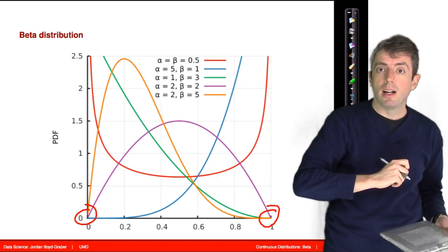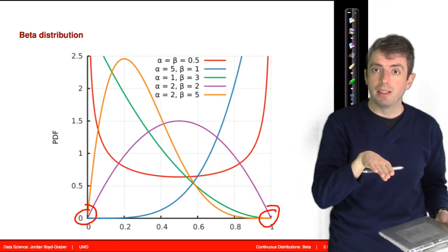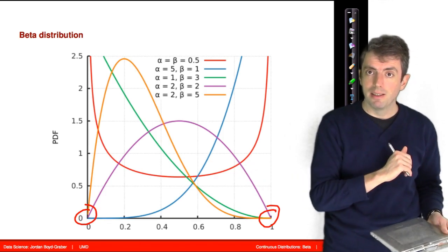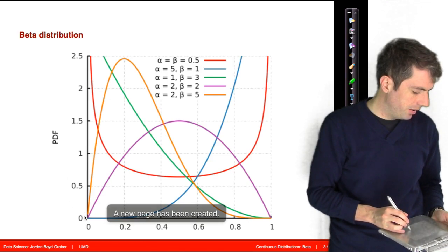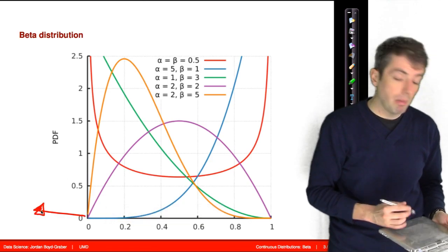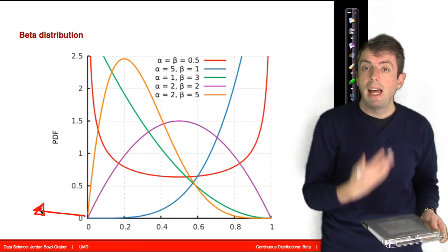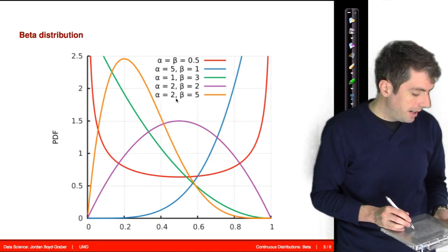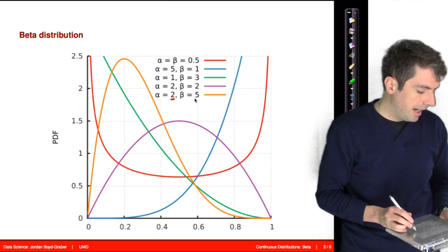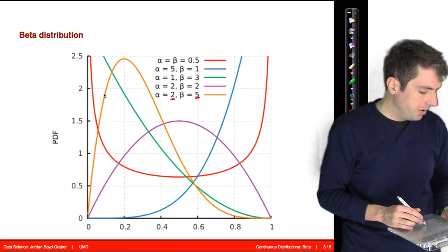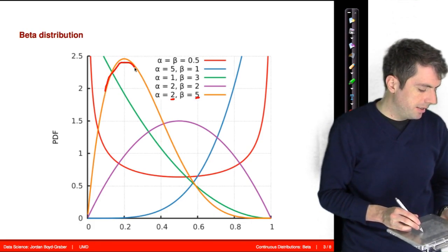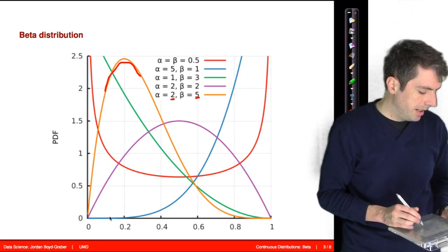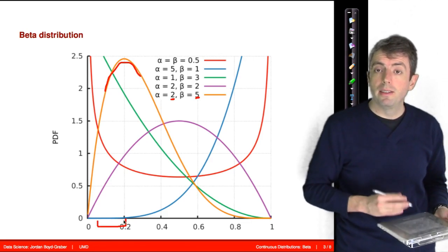The second you get beyond zero, the probability is zero, so anything to the left is completely impossible as an outcome of the beta distribution. If you choose alpha equal to 2 and beta equal to 5, you get more of a skewed distribution, meaning the outcome is more likely to be in the range close to zero.